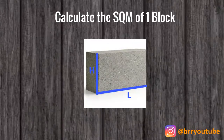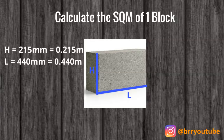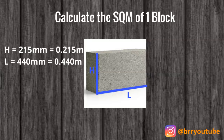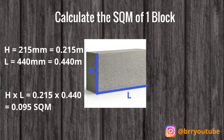Once we've got the size of the wall and we've chosen what blocks we're going to use, we need to do a similar calculation to find the square meterage of one single block. I'm using a standard British concrete dense block — the height is typically 215 millimeters and the length is typically 440 millimeters. Converting to meters by dividing by 1000, we get 0.215 meters for the height and 0.44 meters for the length. Multiplying these gives us 0.095 square meters per block.